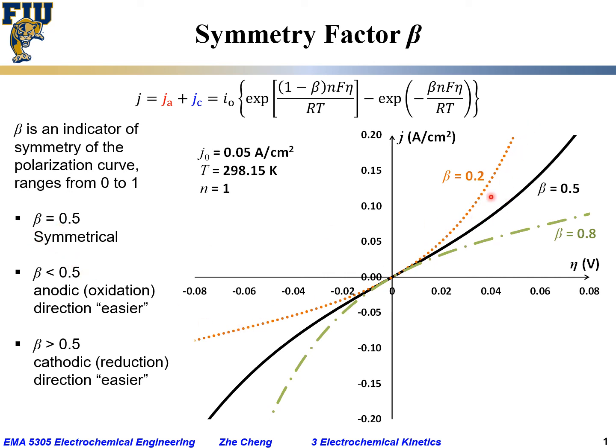And if it's smaller than 0.5, quite often it means the anodic oxidation direction is easier. Well, if it's greater than 0.5, that means at the same overpotential, the reduction on the cathodic side would appear to be easier. Okay?